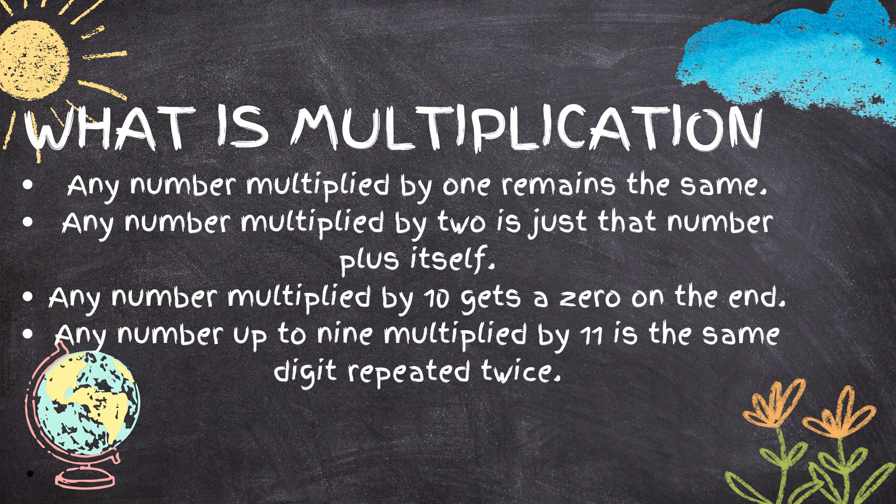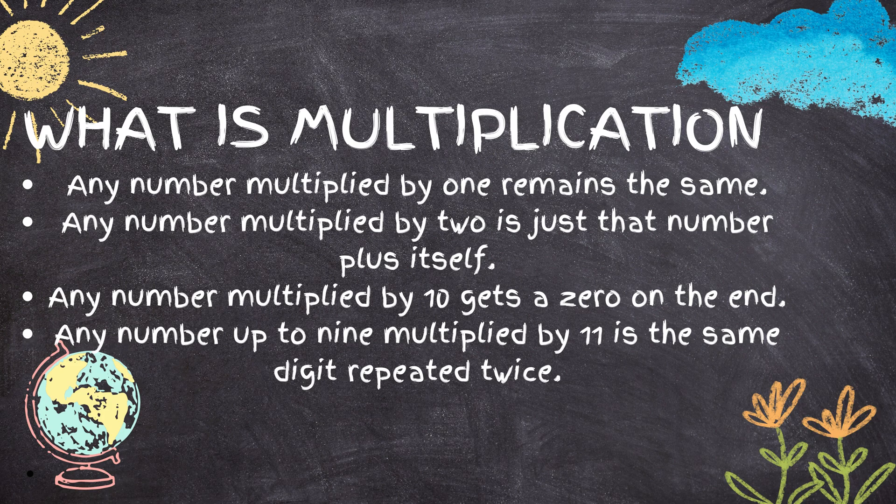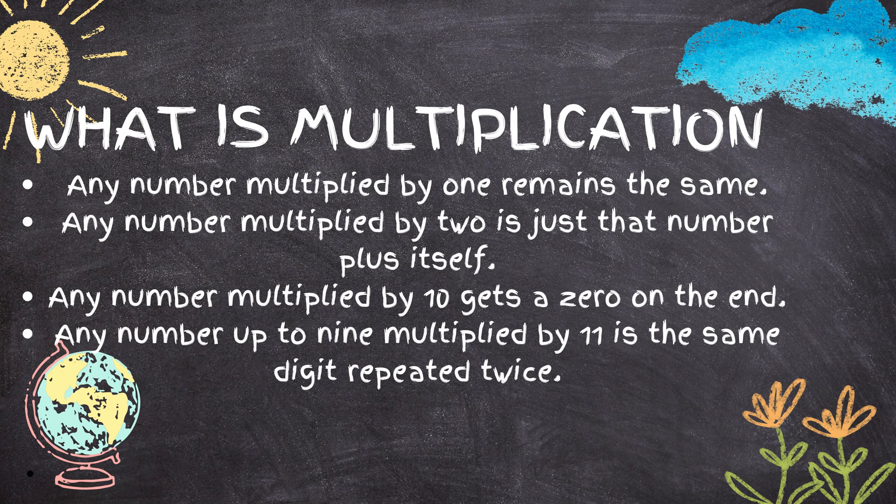Any number multiplied by 2 is just that number plus itself. So this would be 2 times 2. 2 times 2 is the same as 4—it's 2 plus 2, which gives you 4.